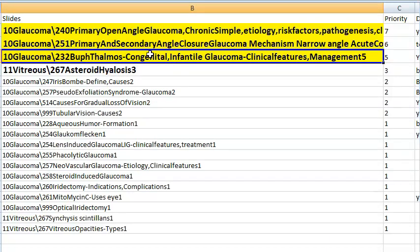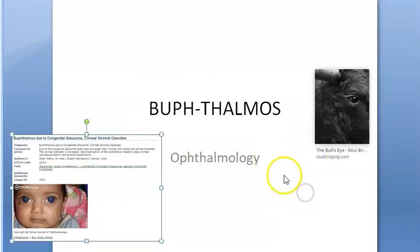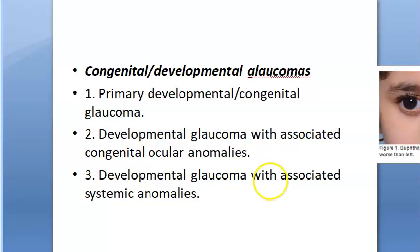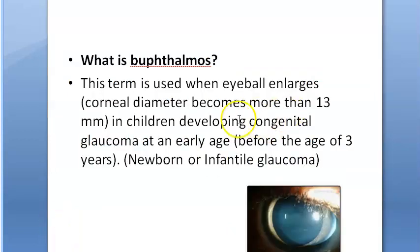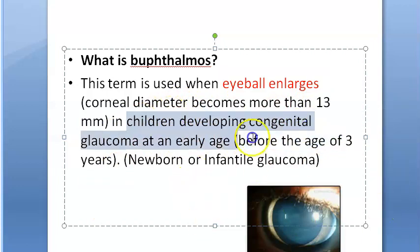Buphthalmos (bull's eye) in congenital/developmental glaucoma: the eyeball enlarges to more than 13 mm before age 3 years. Types: newborn glaucoma, infantile glaucoma, and juvenile glaucoma. The cornea is enlarged, and Haab's striae (curved lines) are visible. Large cornea must be differentiated from megalocornea. These patients can have blue sclera.